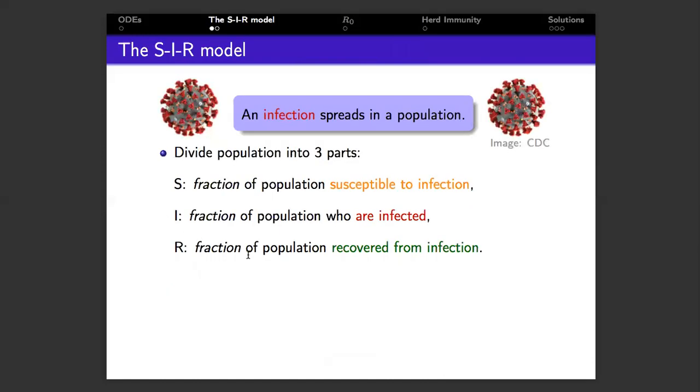So an infection is spreading in a population. We divide this population into three parts, S, I and R. S is the fraction of the population who are susceptible to infection, i.e. those who have not yet been infected. I is the fraction of the population who are infected and R is the fraction of the population who have contracted and recovered from the infection.